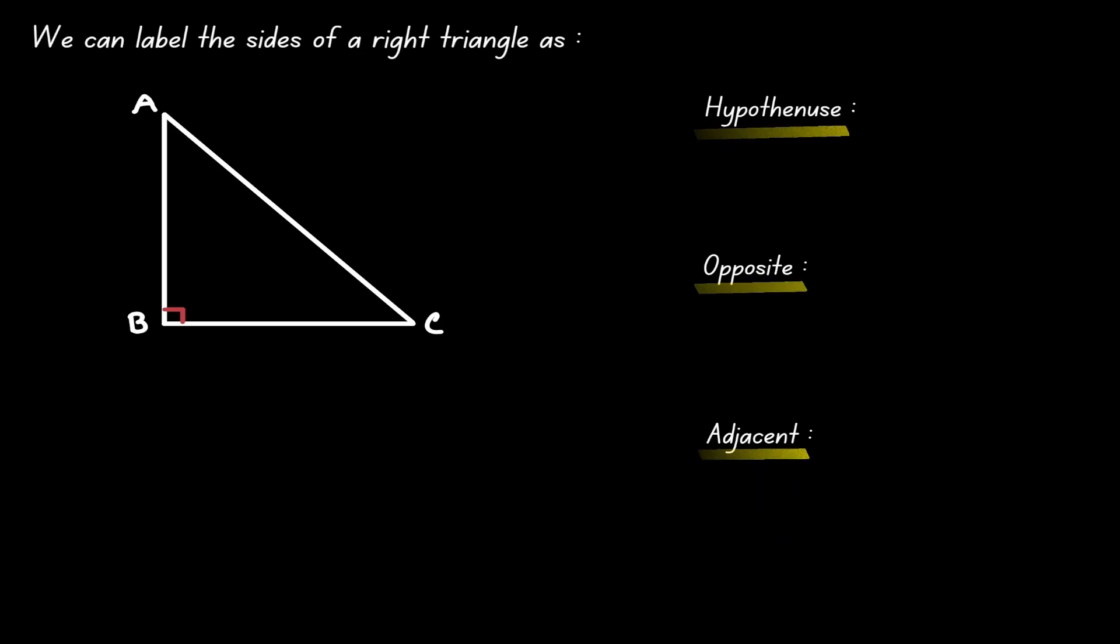Let's define each one of them. The hypotenuse in a right triangle is the side that is opposite to 90 degrees.